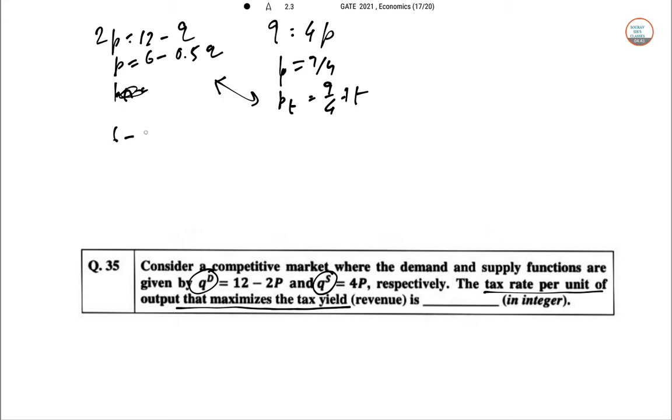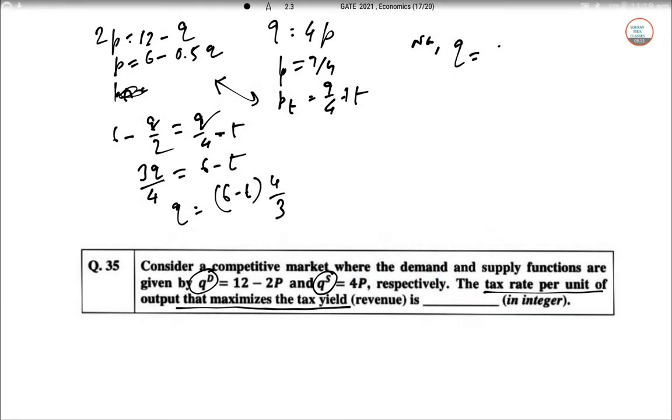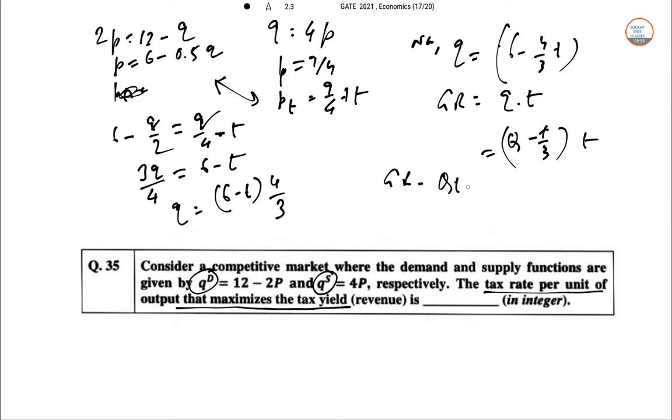From here we get: 6 - Q/2 = Q/4 + t, so Q/4 = 6 - t, which gives Q = (6 - t) × 4/3. Now the government revenue GR is Qt, so GR = 6Q - Qt/3. To maximize GR, we take the derivative: dGR/dt = Q - 2t/3 = 0.